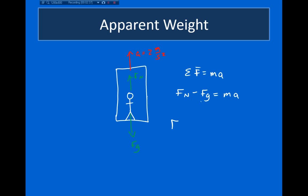So my normal force is equal to the force due to gravity, plus mass times acceleration. Looking at this, this is my apparent weight, and this is my actual weight. So we can see that my apparent weight is equal to my actual weight, plus my mass times the acceleration of the elevator.